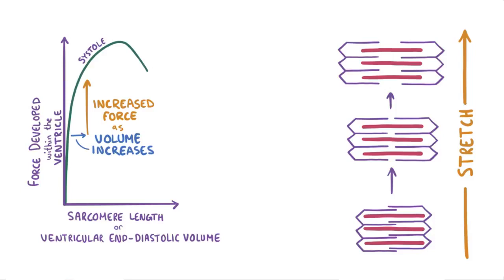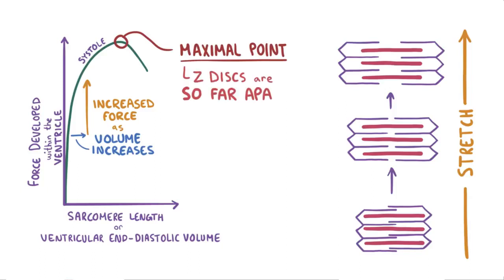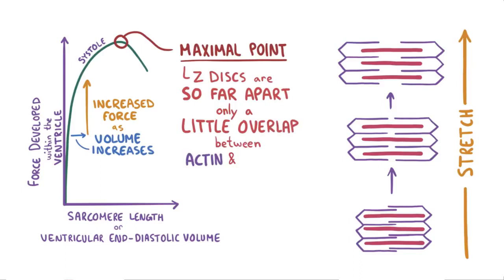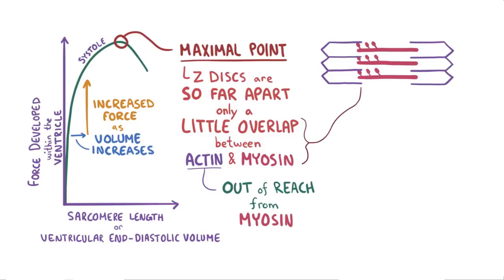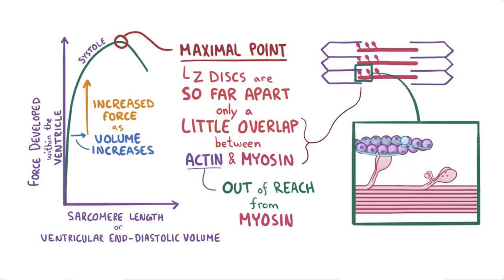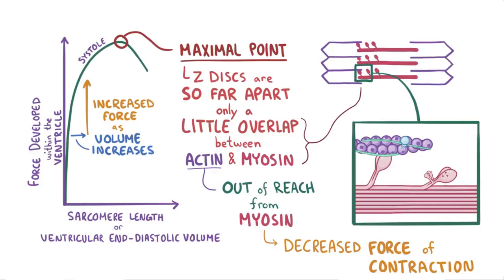This stretching can go until it exceeds a maximal point, after which things start getting too stretched out. This means the Z-discs are so far apart from each other that there's only little overlap between actin and myosin filaments, and actin gets out of reach from the myosin. As a result, there's a decreased number of myosin heads that manage to attach to actin and pull it towards the M-line. This leads to a decreased force of contraction, so the curve starts falling off again.